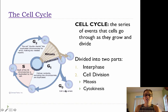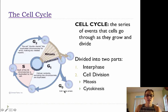The cell cycle is the series of events that the cell goes through as it grows or prepares to divide, to go through mitosis. Now the cell cycle is divided into two parts: